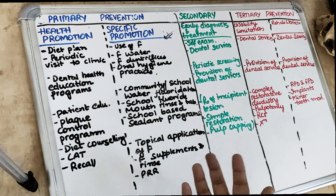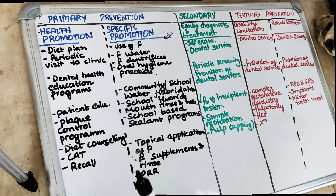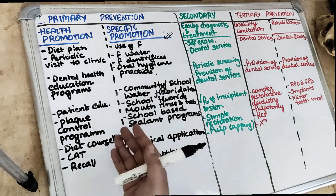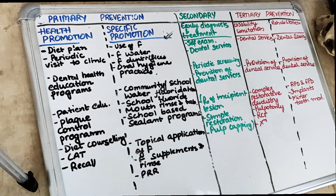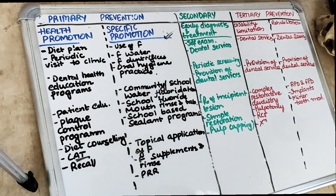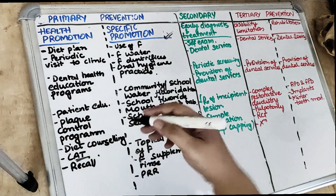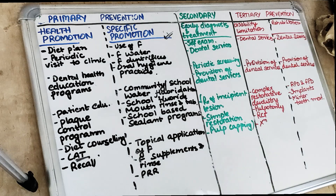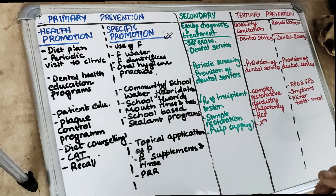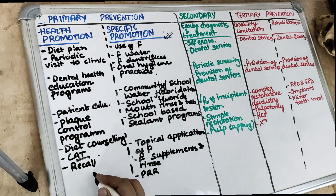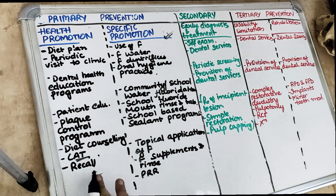Specific promotion involves the use of fluoride. Health promotion in general means diet counseling — telling patients that sticky food causes more caries, educating the patient. Also, plaque control program, diet counseling, and caries activity test. If a patient has a high caries activity test, we do fluoride treatment and ask the patient to quit sticky carbohydrate foods. And recall visits — recall and reinforcement.